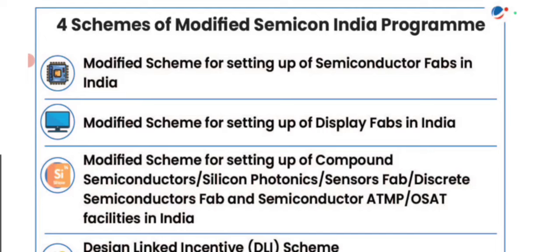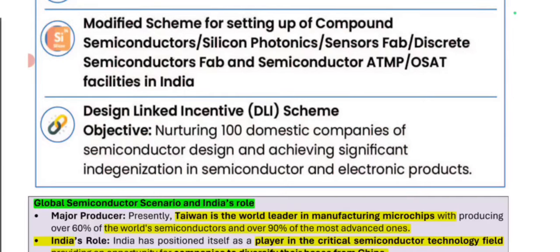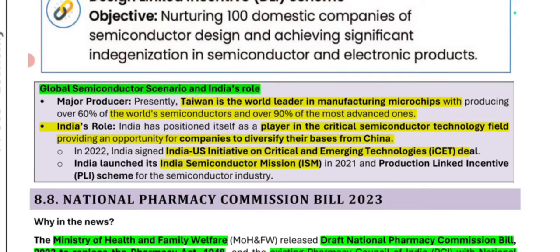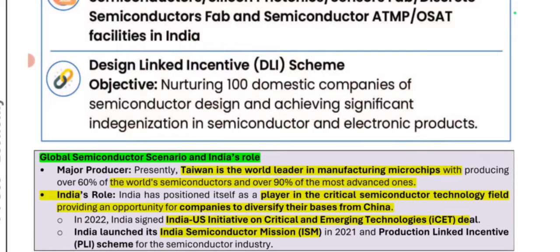There are four schemes under the Modified Semicon India program: (1) modified scheme for setting up semiconductor fabs in India, (2) display fabs in India, (3) silicon photonics, sensor fabs, discrete semiconductor fabs, and semiconductor ATMP, and (4) the Design Linked Incentive scheme targeting 100 domestic companies in semiconductor design. Globally, Taiwan currently produces 60% of semiconductor microchips and over 90% of the world's most advanced chips. India and the US have launched the Critical and Emerging Technology initiative. India launched its Semiconductor Mission in 2021 along with the PLI scheme for the semiconductor industry.